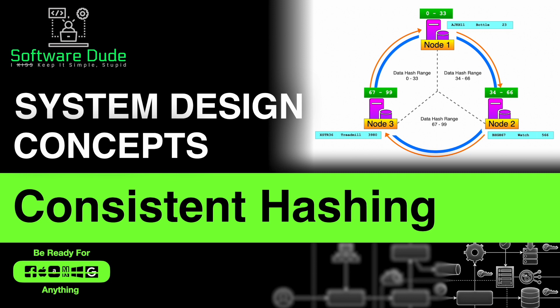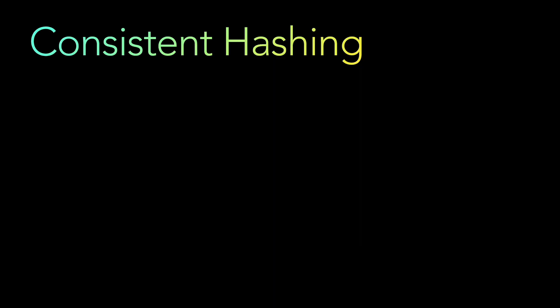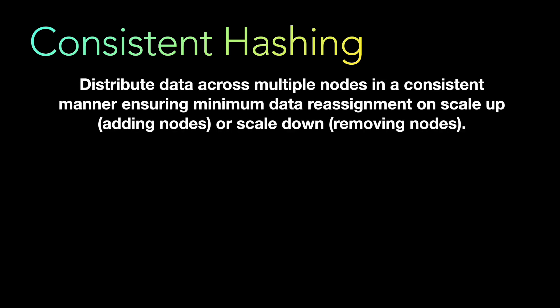So what is consistent hashing? Consistent hashing is nothing but distributing data across multiple nodes in a consistent manner, which ensures that minimum data reassignments are required on scaling up or scaling down. Whenever you talk about a distributed system, there are multiple nodes in that system.